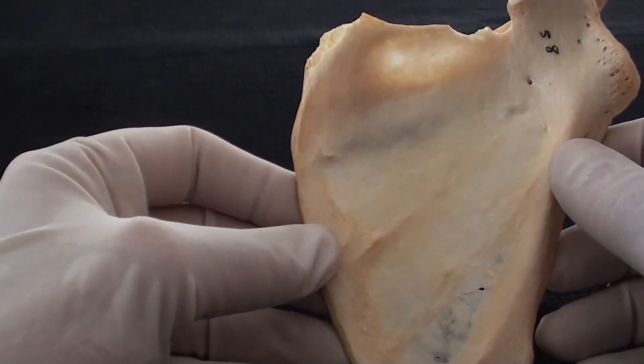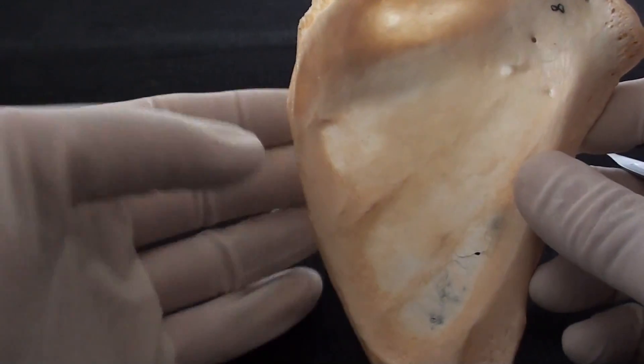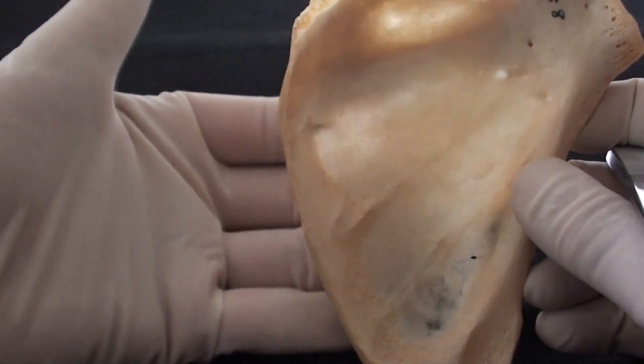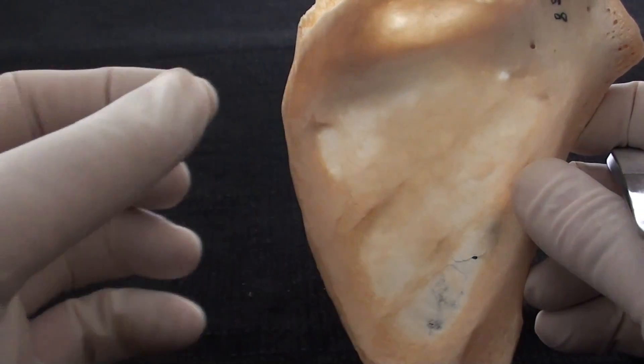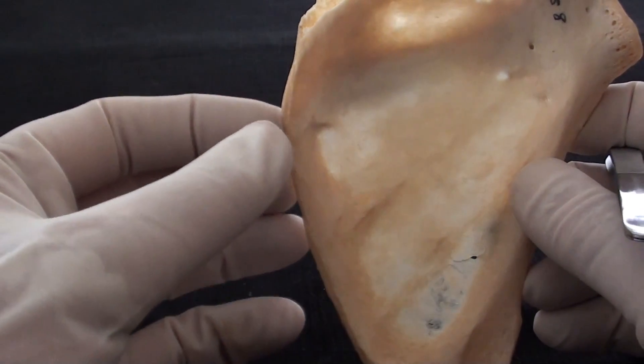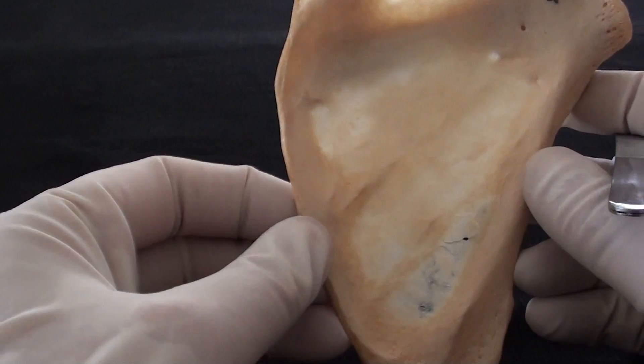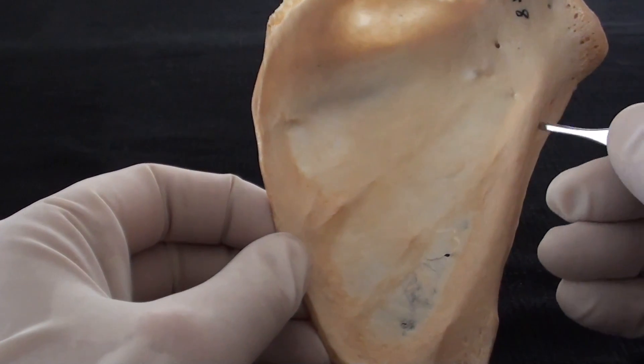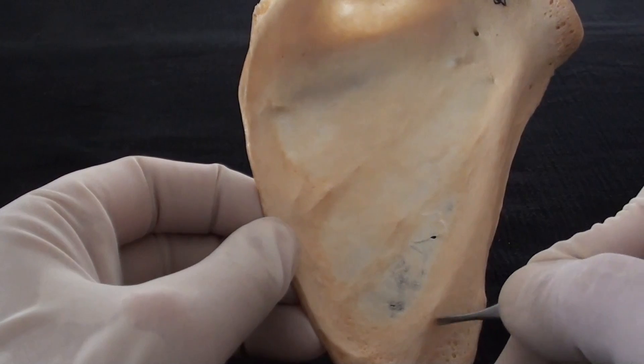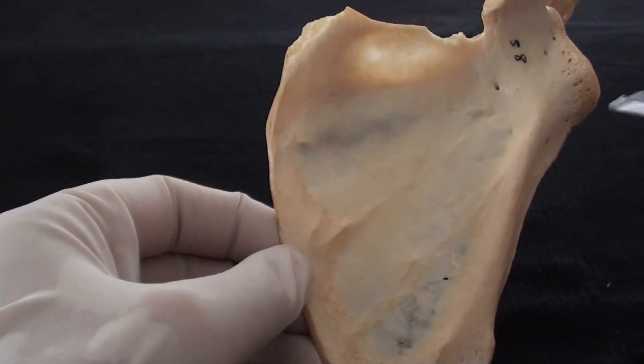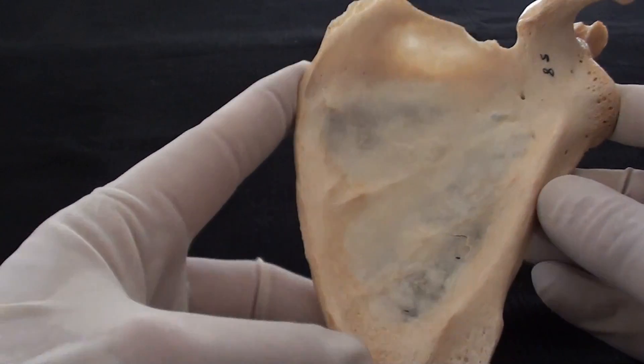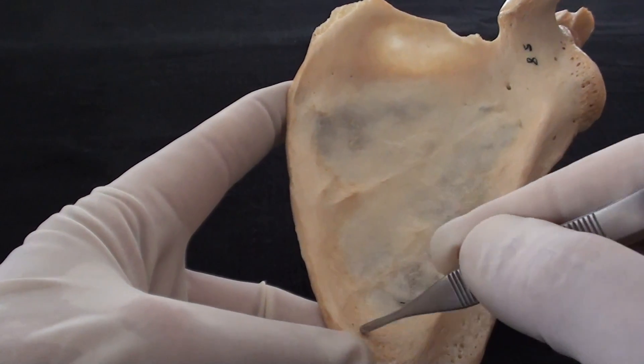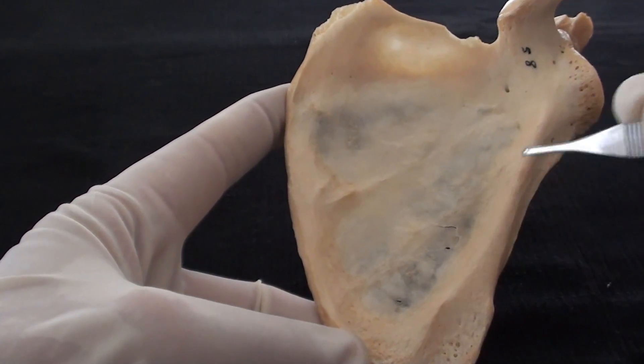As it was mentioned earlier the scapular blade is quite thin, almost transparent whereas the peripheral parts of the bone are much thicker. Additional muscles will use the margins of the scapula for their attachment so on this costal surface on the top of what it was said that subscapular fossa will be the attachment of the subscapularis muscle.